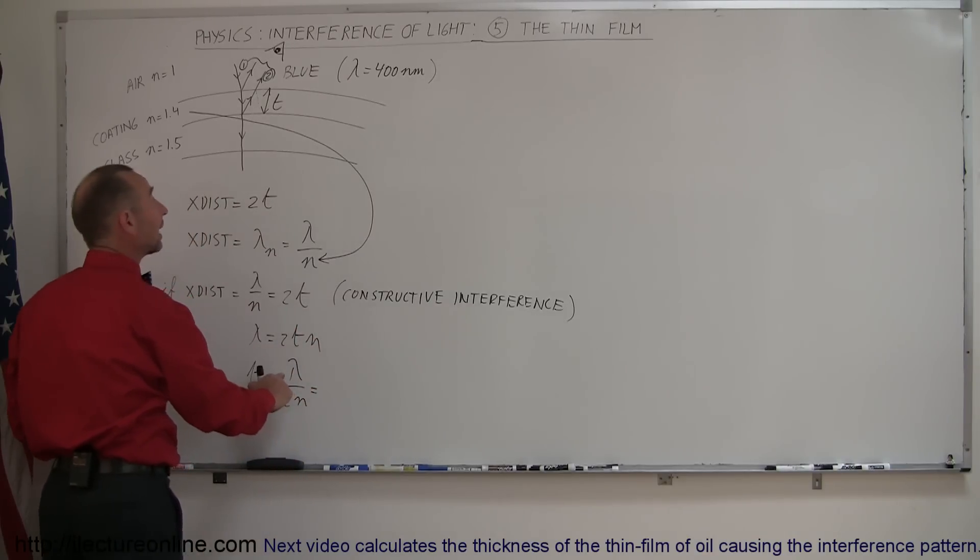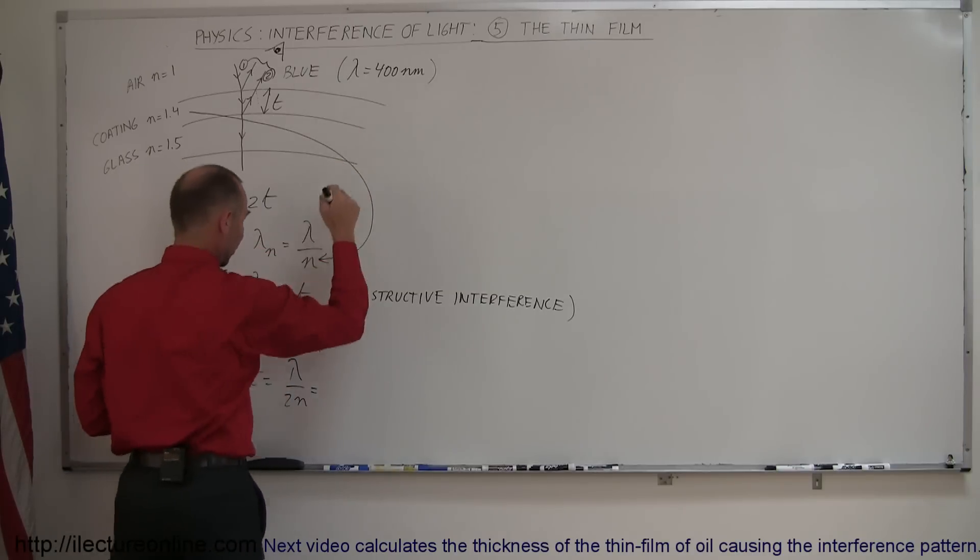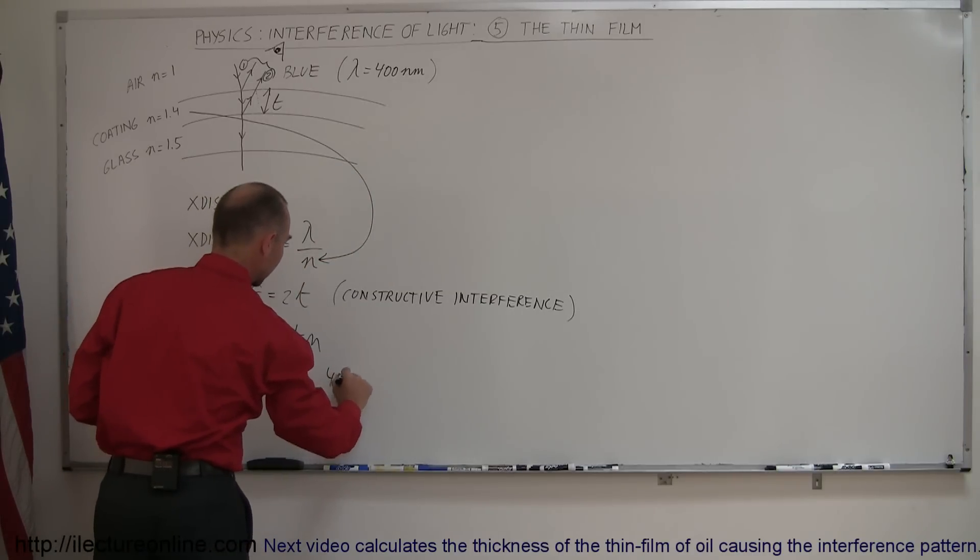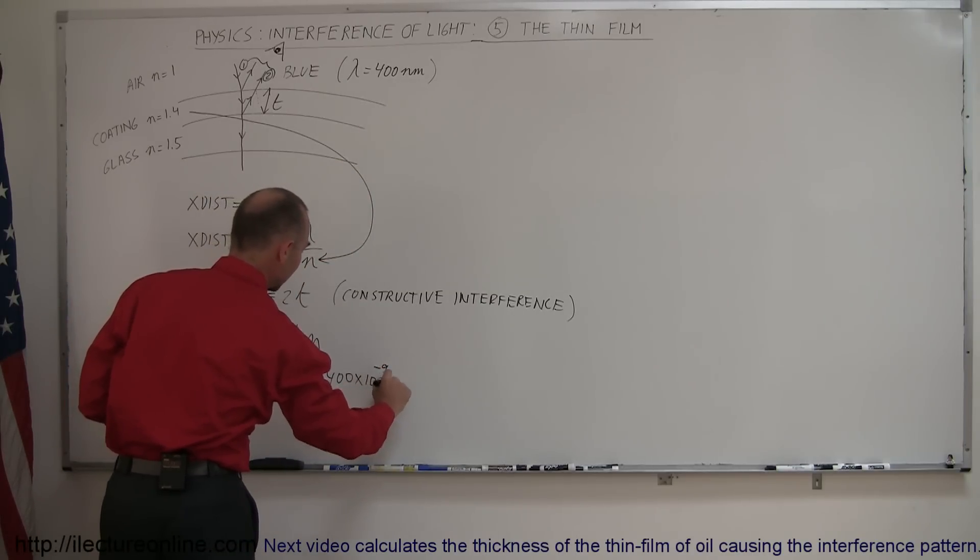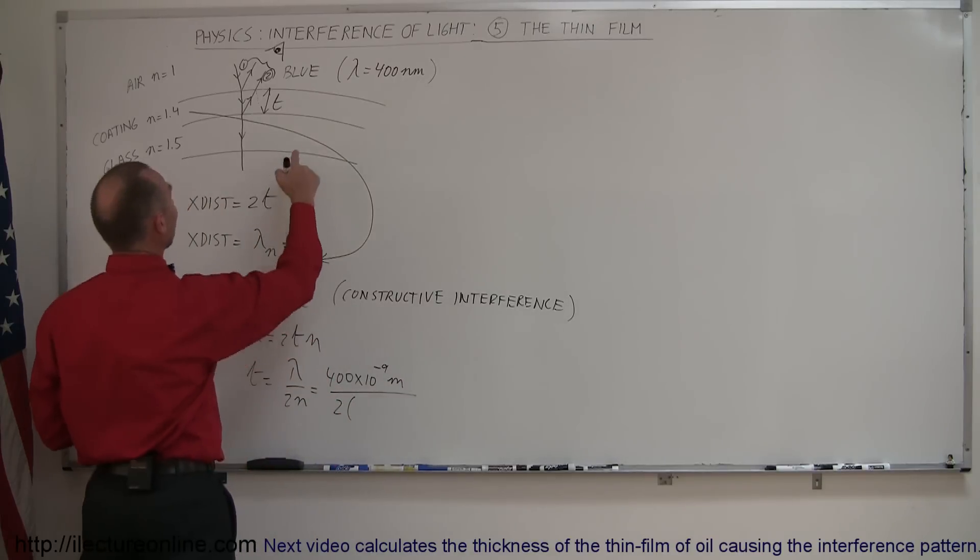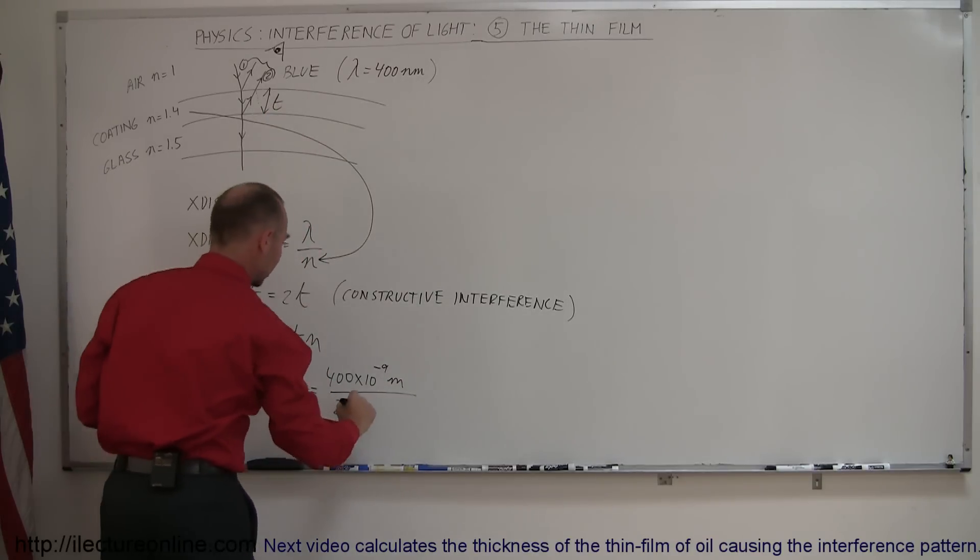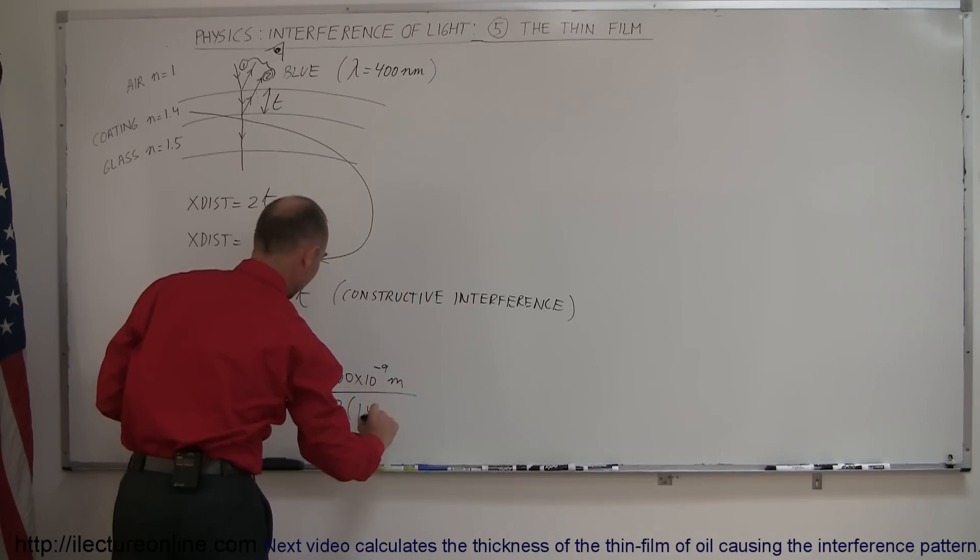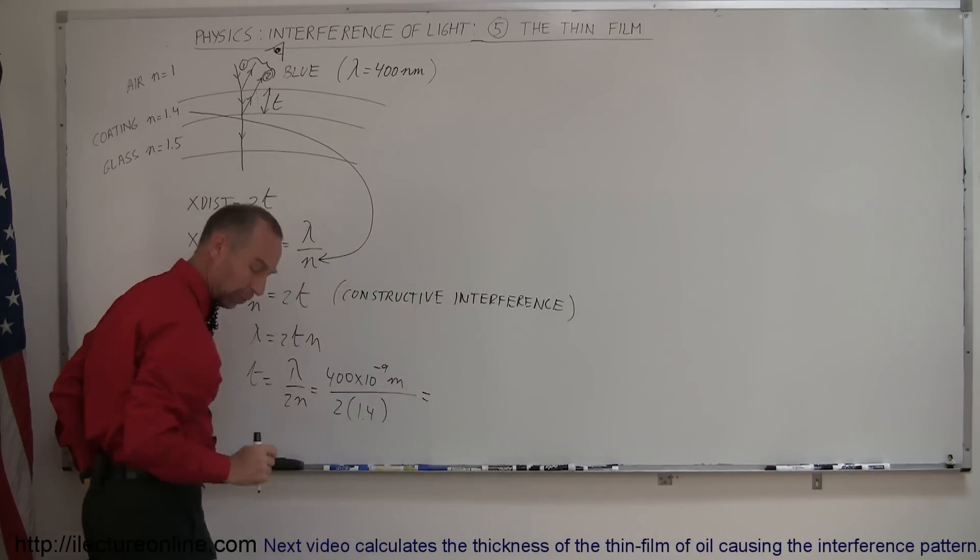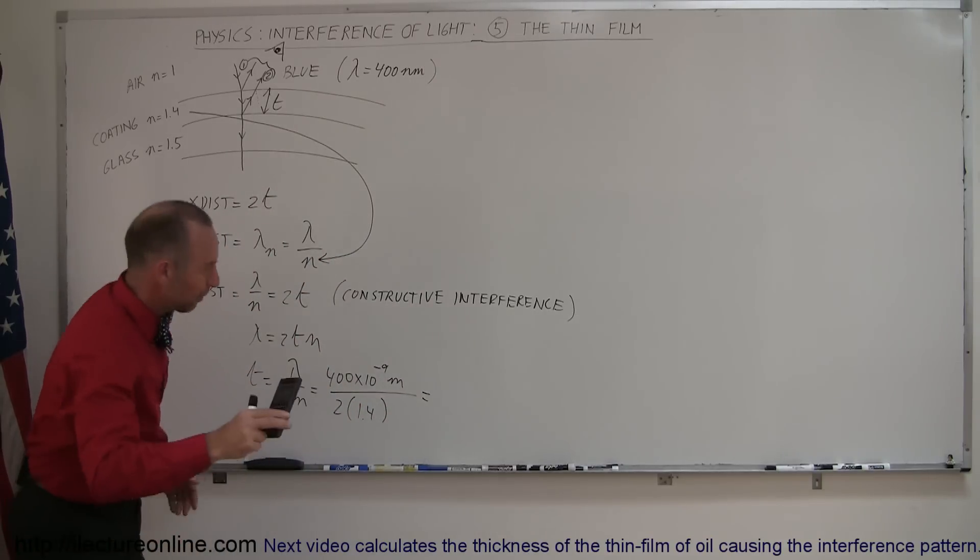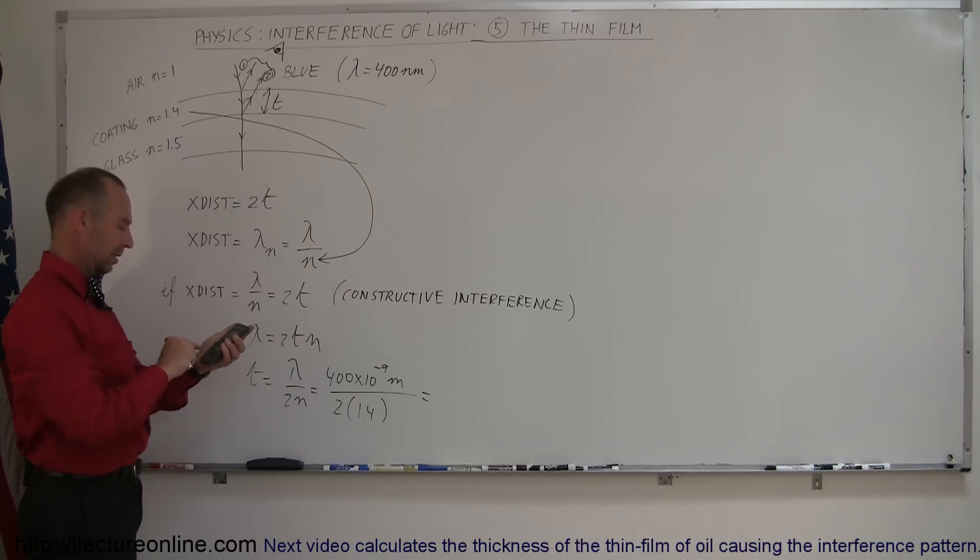And the wavelength we're trying to get to be reflected is going to be 400 nanometers, that's 400 times 10 to the minus 9 meters, and we divide that by 2 times n, and n of the coating is 1.4. And so where's my calculator? Here we go. So we take 400 e to the minus 9 divided by 2 divided by 1.4.